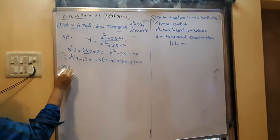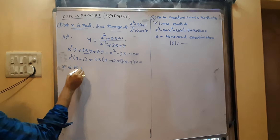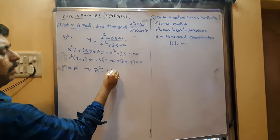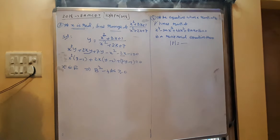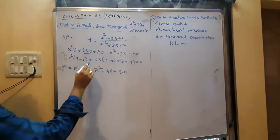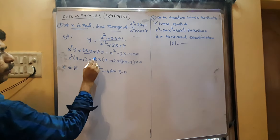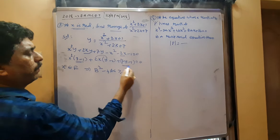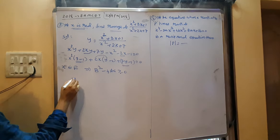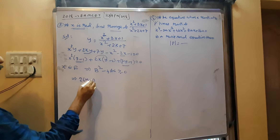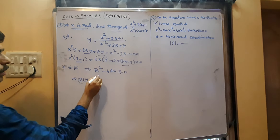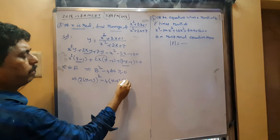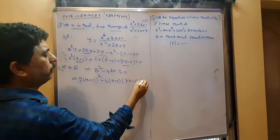Since x is real, the discriminant b² − 4ac ≥ 0. Here b is the coefficient of x, which is 2(y−1); a is (y−1) and c is (7y−1). So: [2(y−1)]² − 4(y−1)(7y−1) ≥ 0.